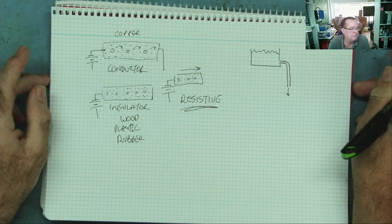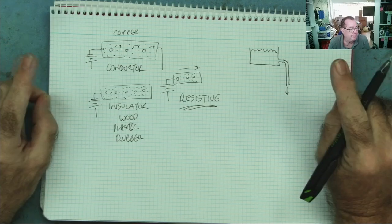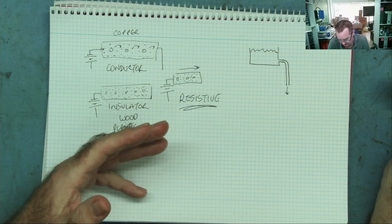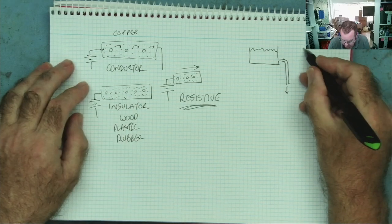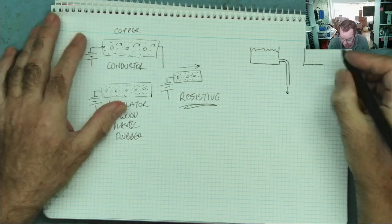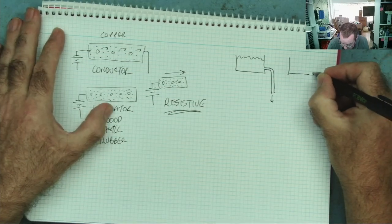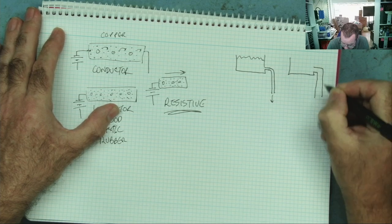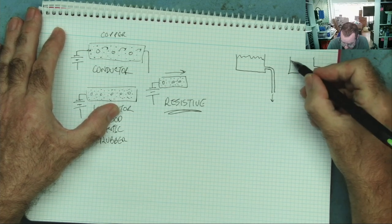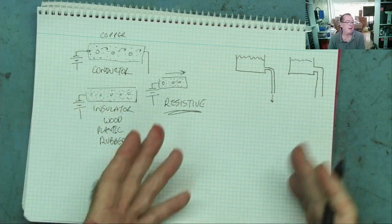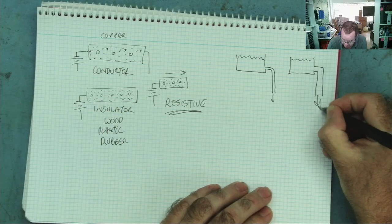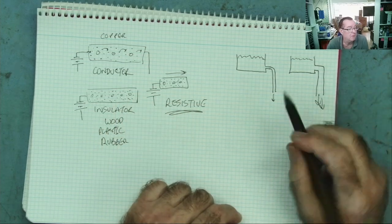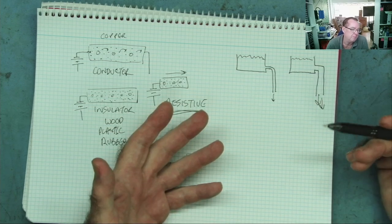How much water will come out of the pipe? Well, that depends on two things. If we want to get more water out of the pipe for a given capacity of water, we could use a wider pipe. If the pipe is wider, more water will come out — that's fairly obvious.